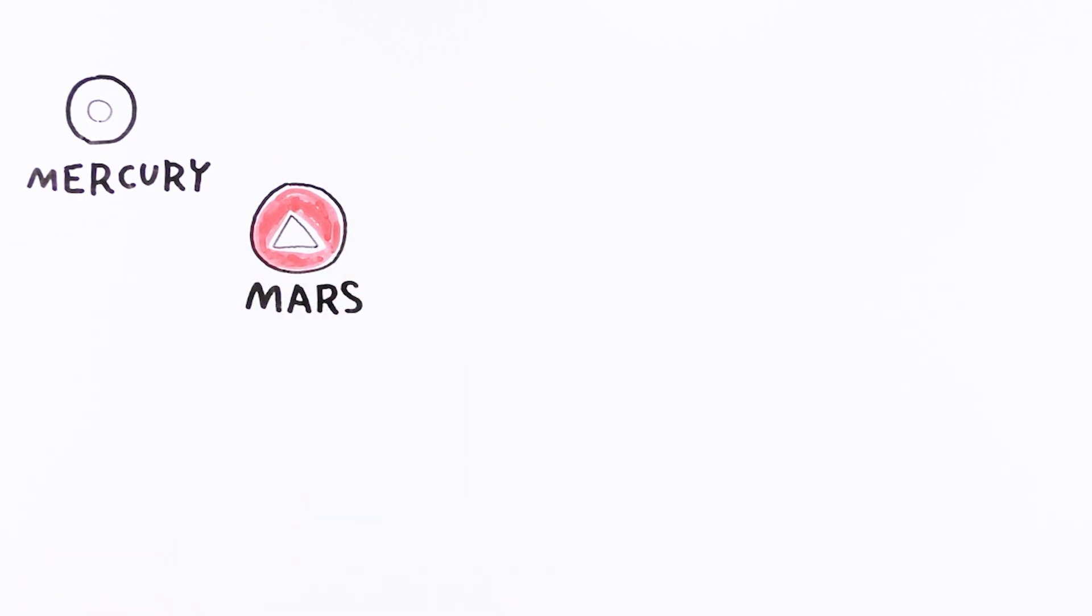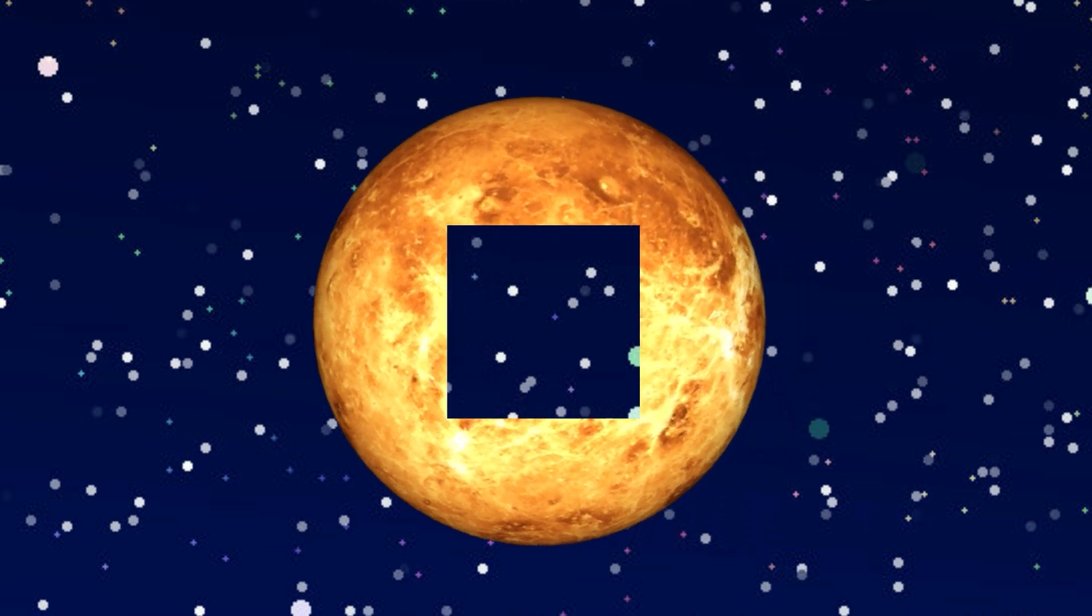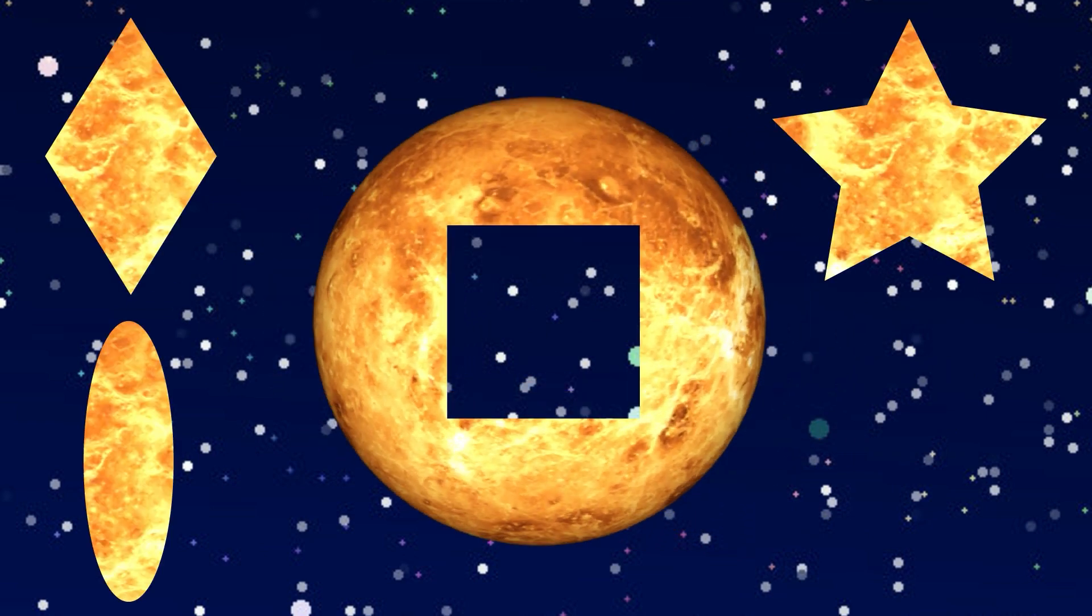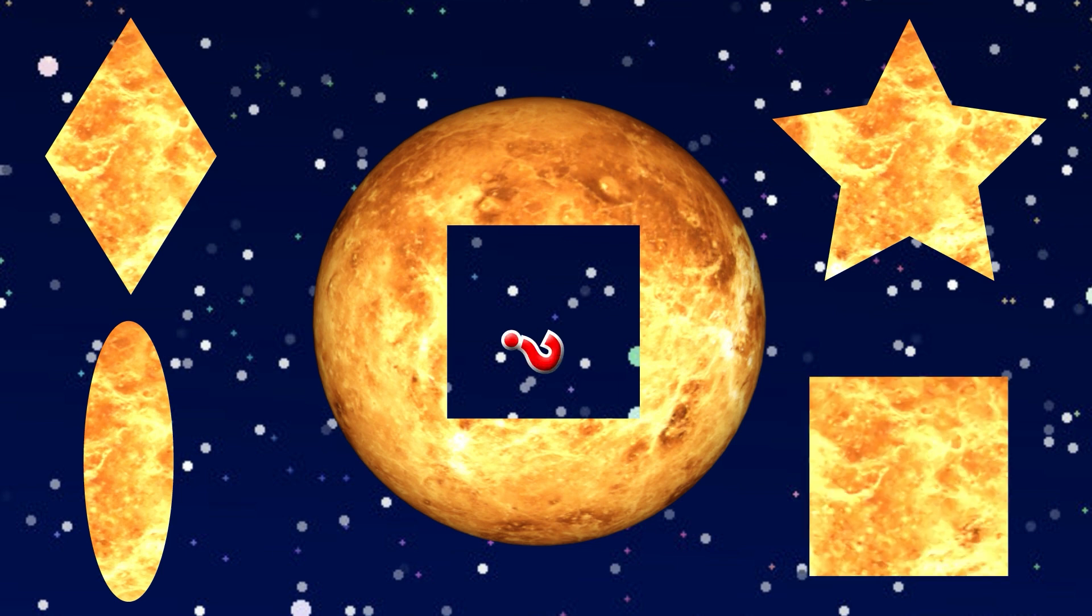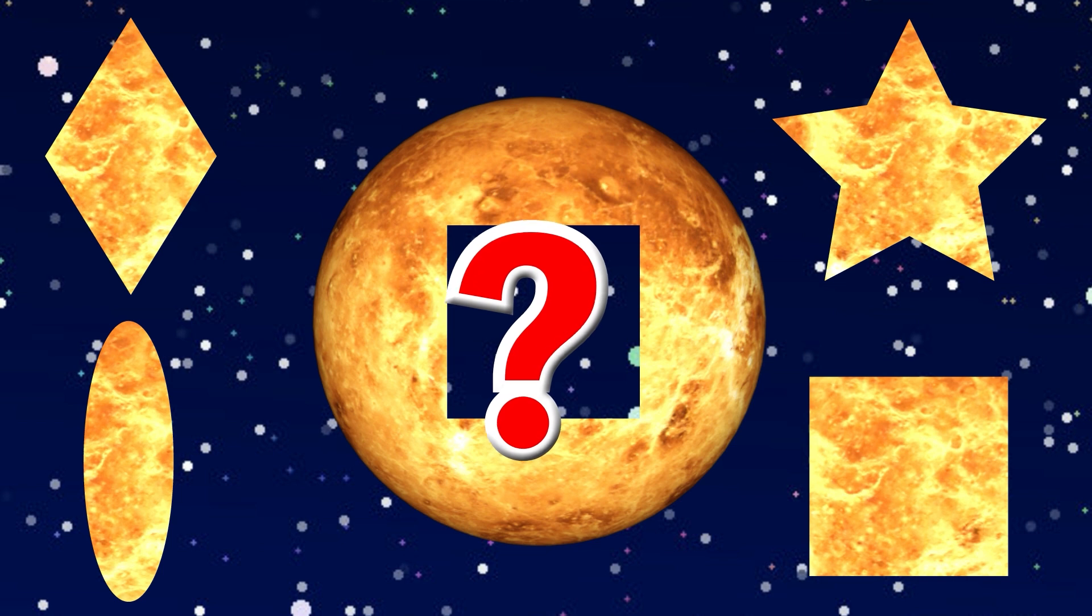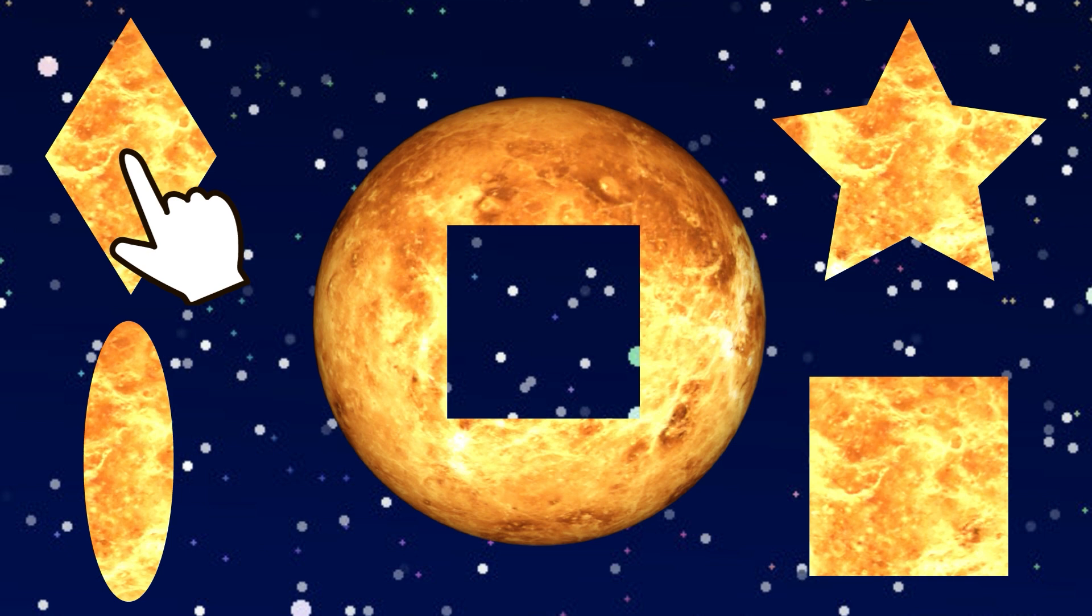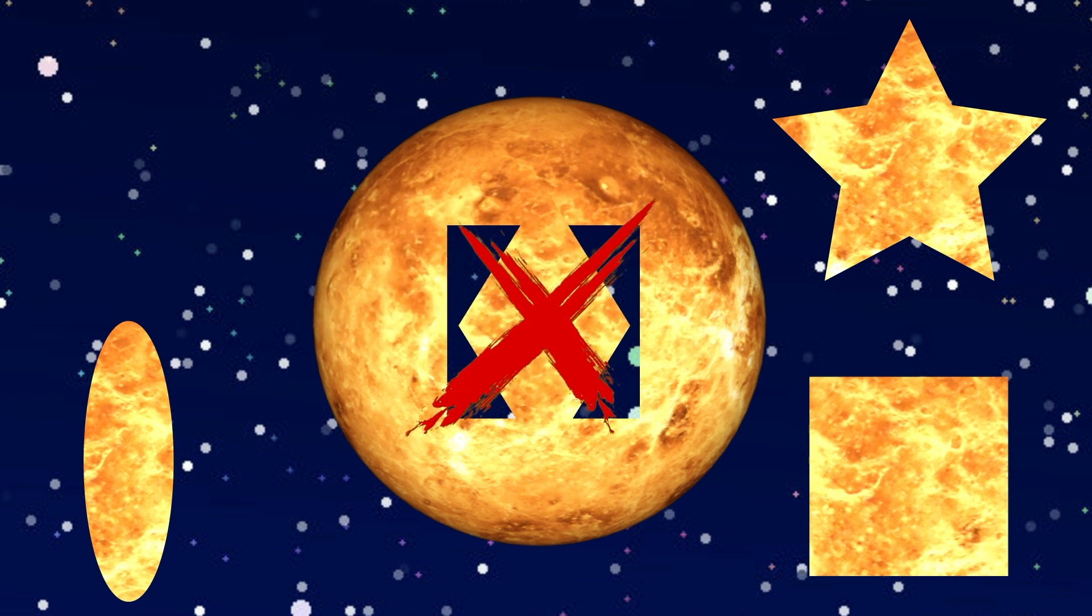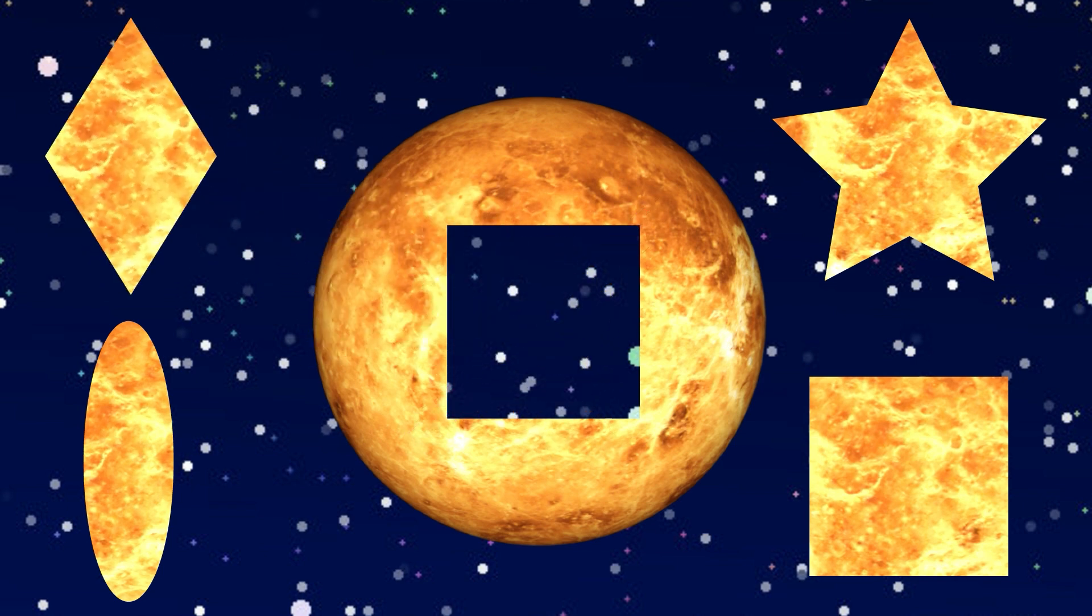Mars. Diamond, Ellipse, Star, Square. What is this? Diamond. Square. Square.